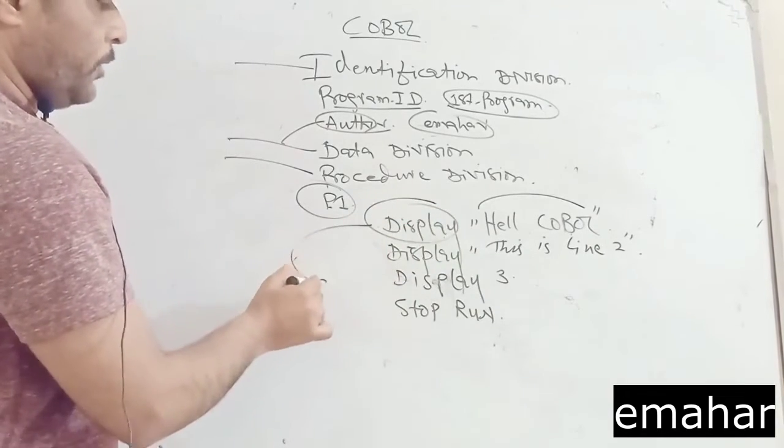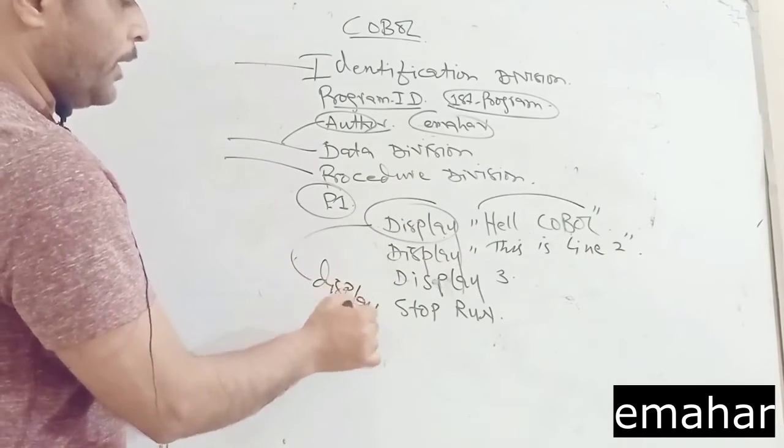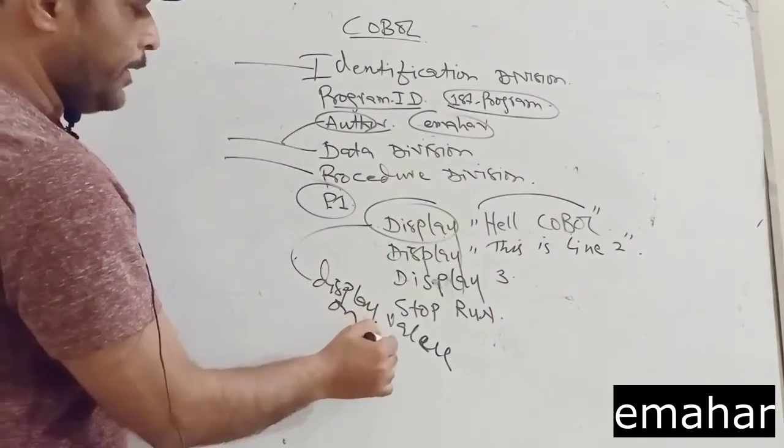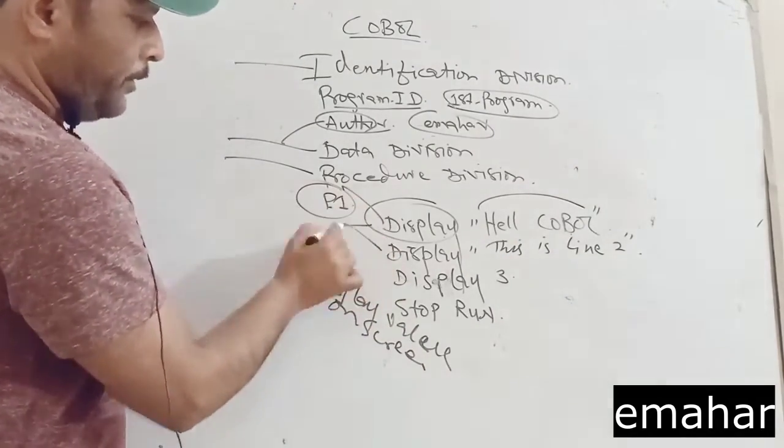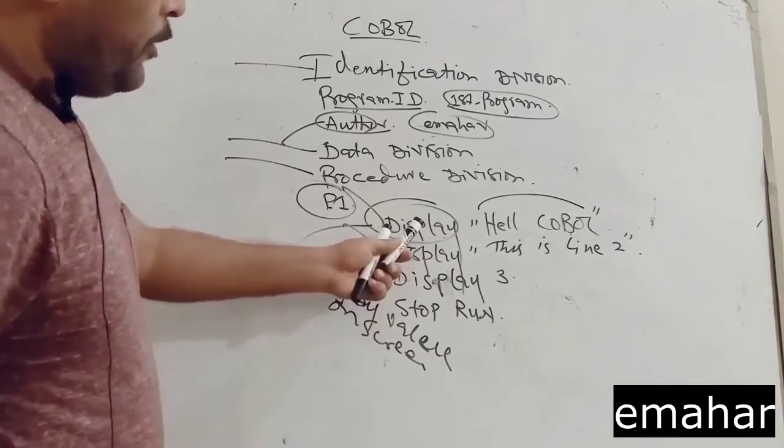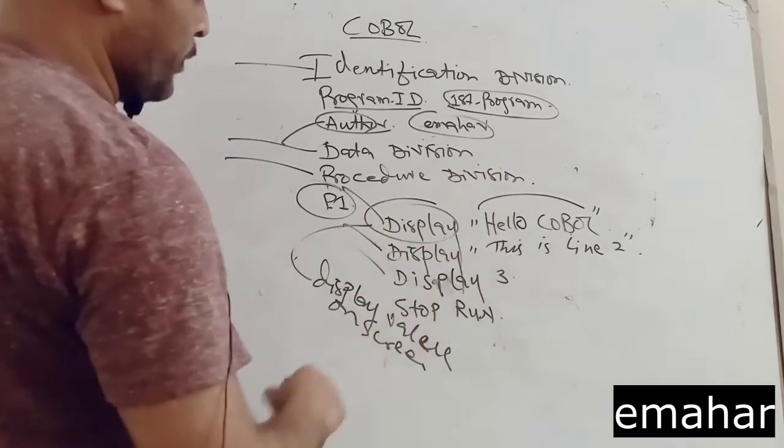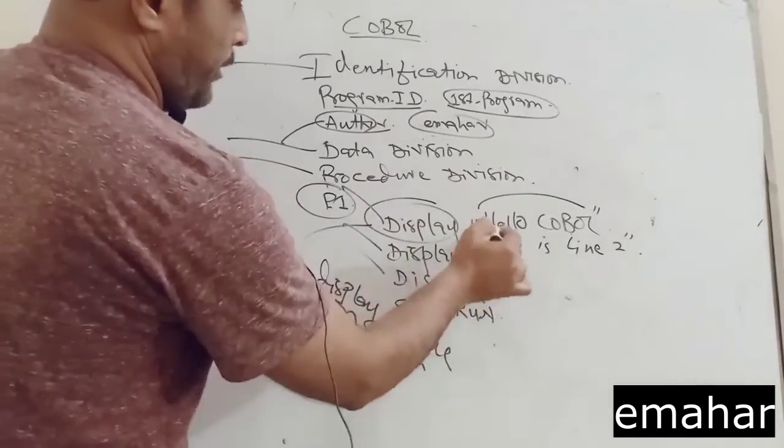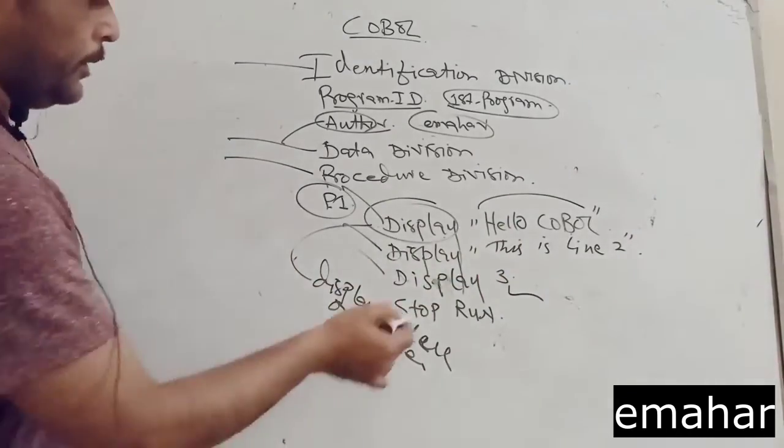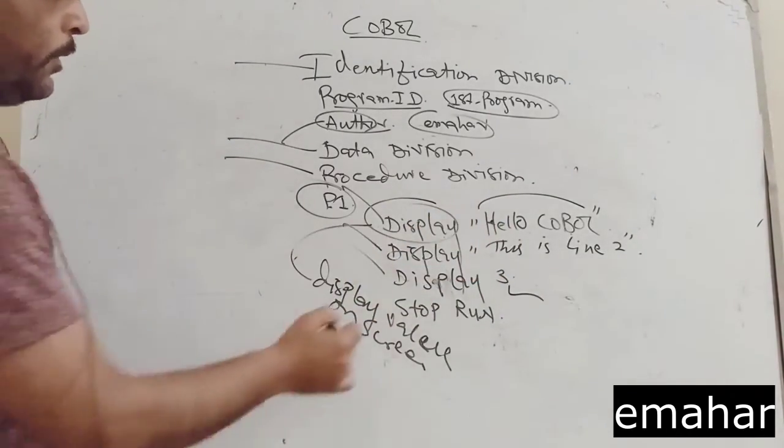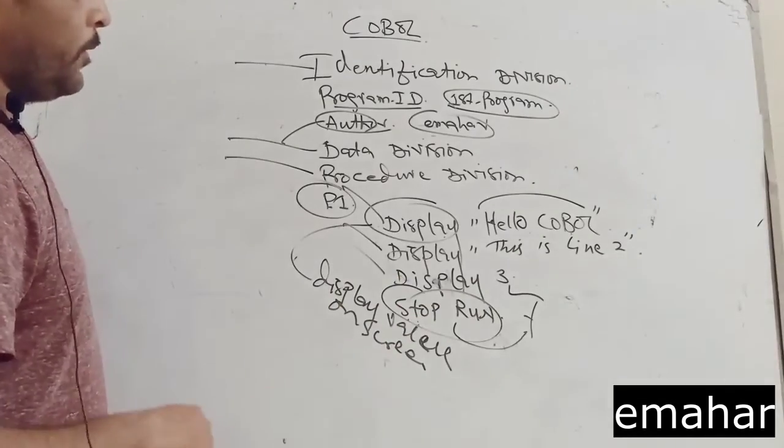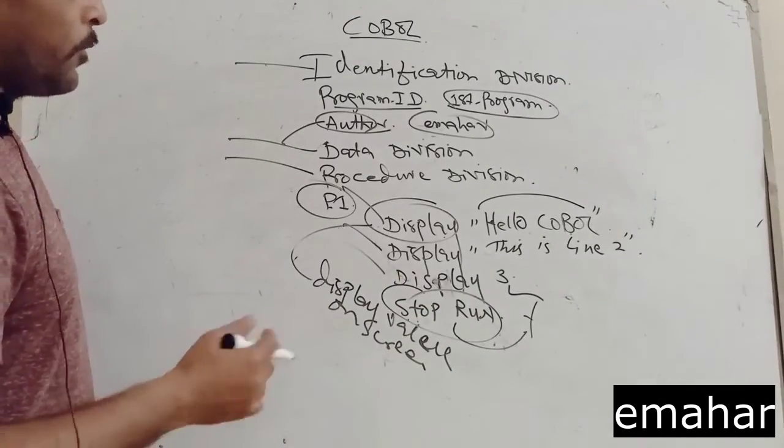Display statement is used to display value on screen. There are three display statements. After execution of this program, the display statement will display hello COBOL, then line is listed, line number two, display three. This is a number value. This is text. Stop run is used to terminate the execution of a COBOL program.